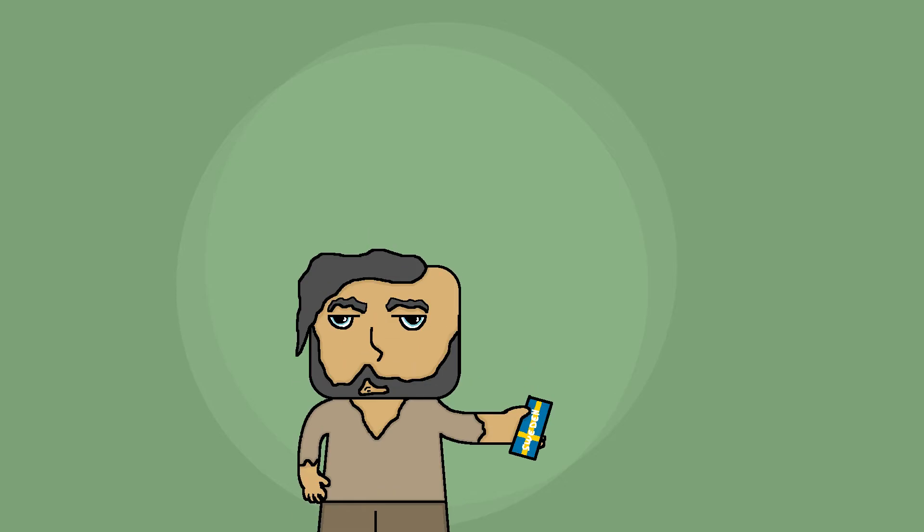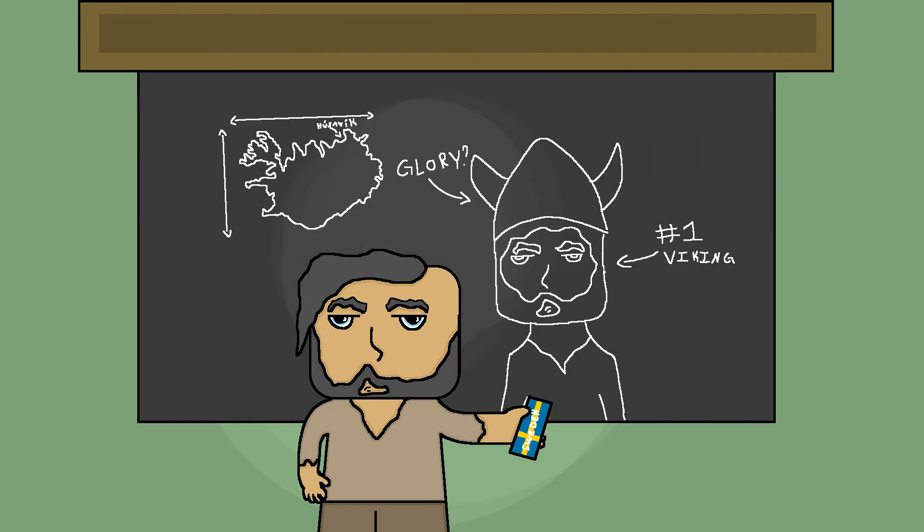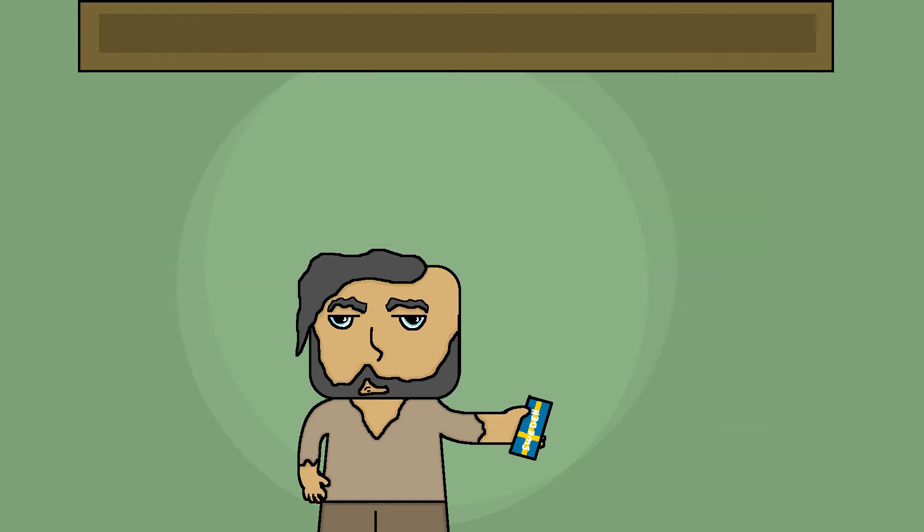The next explorer to reach the land would be a man by the name of Gardar Svavarsson, a Swede who traveled to the island under the direction of his mother, who was a prophet. It was him who discovered it was an island when he successfully traveled around it. He would build a house in Husavik for the winter.